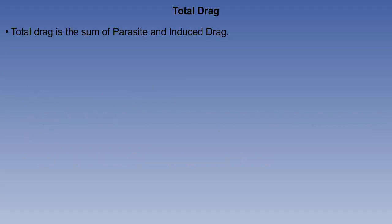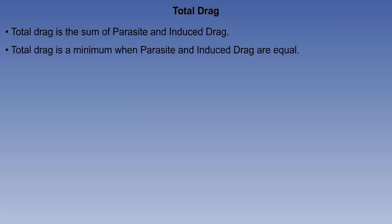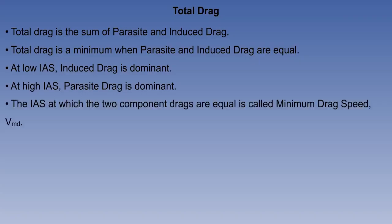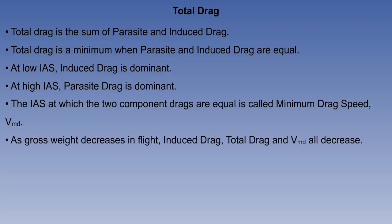Total drag is the sum of parasite and induced drag. Total drag is a minimum when parasite and induced drag are equal. At low IAS, induced drag is dominant. At high IAS, parasite drag is dominant. The IAS at which the two component drags are equal is called minimum drag speed, VMD. As gross weight decreases in flight, induced drag, total drag and VMD all decrease.